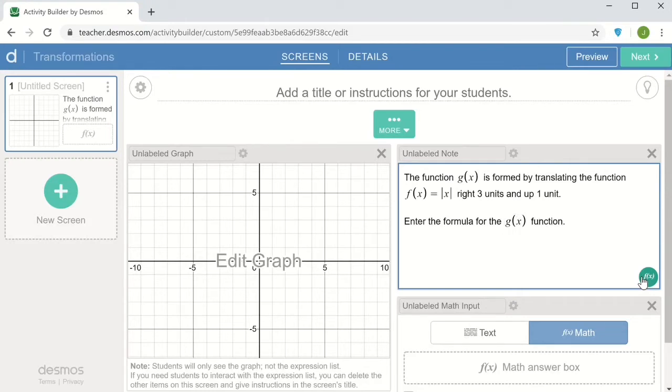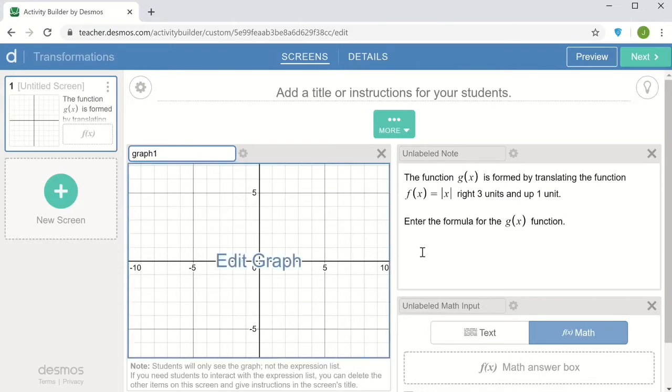So now I want to connect the components and build them together a little bit. So I want to give the graph a name. I'm going to call it graph one. And I'm going to give the input box a name. I'll call it input one. So that in the computation layer script, the different components can identify each other.